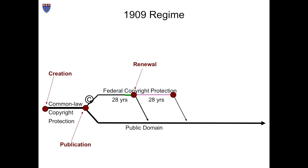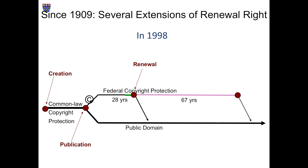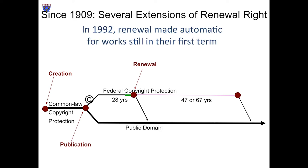With respect to works first published under the auspices of the 1909 statute, this basic structure has remained intact, but the length and mechanics of the renewal term have been adjusted several times. In 1976, the renewal term was extended from 28 to 47 years. In 1998, as part of the Copyright Term Extension Act, it was extended from 47 to 67 years. In 1992, the renewals of works still in their first term were made automatic rather than voluntary. The result is that copyrighted works ceased falling into the public domain at the end of their initial 28-year terms.